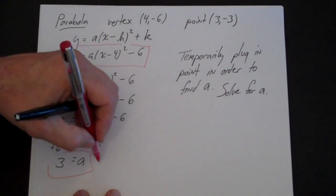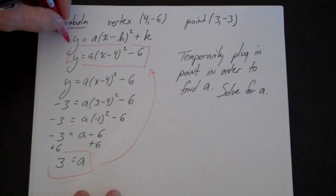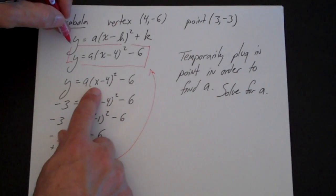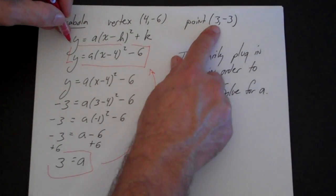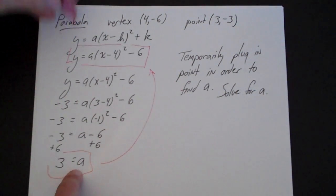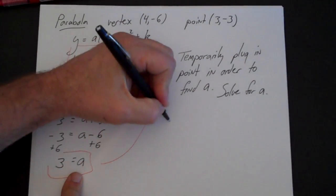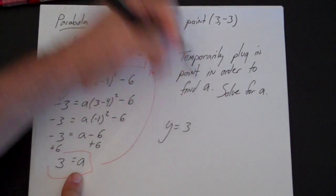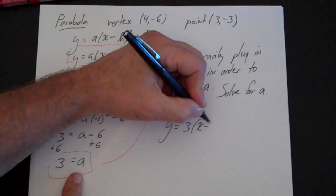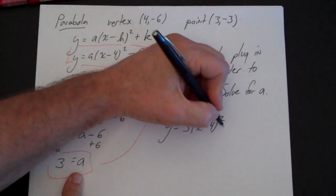Go back to here where I had boxed it in red. I have everything there I need except for a. By temporarily plugging in the point x and y value of the point, I find a. I plug in a and I am done. Your final answer is 3(x - 4)² - 6.